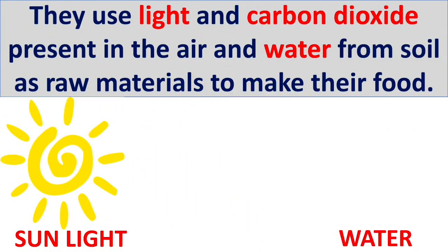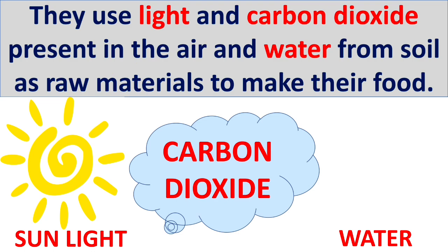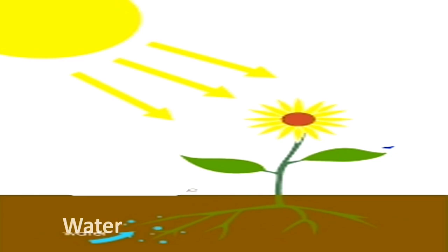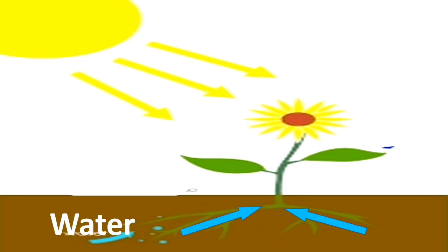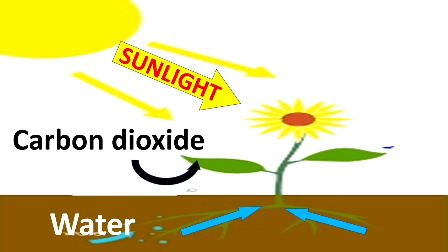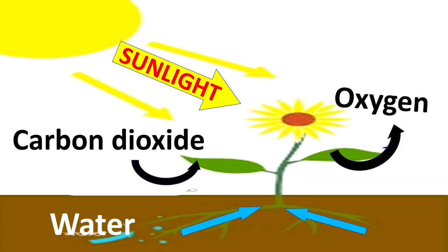Leaves use sunlight and carbon dioxide present in the air, and water from the soil, as raw materials to make their food. Firstly, water is absorbed by the roots and carried through the stem to the leaves. Carbon dioxide is taken from the air through stomata, and when sunlight falls on the leaves it is absorbed by chlorophyll present in the leaves. In the presence of sunlight, green leaves change water and carbon dioxide into food. That food made is called glucose, which is stored in the form of food. After food is prepared, oxygen is given out through stomata.